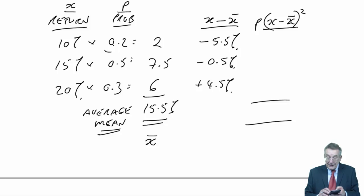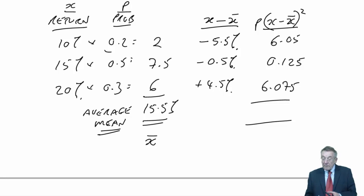In each case, square the difference, multiply by the probability, and add them up to get the average. 5.5 squared times probability of 0.2 is 6.05. 0.5 squared times the probability of 0.5 is 0.125. Finally, 4.5 squared times the probability of 0.3 is 6.075. Add them up, they're all positive because we squared, and it comes to 12.25.